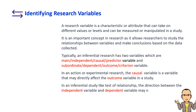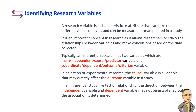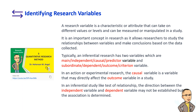In an inferential study like a test of relationship, the direction between the independent variable and dependent variable may not be established but the association is determined. For a better understanding of variables, you may watch my video lecture 5 on quantitative research methods.